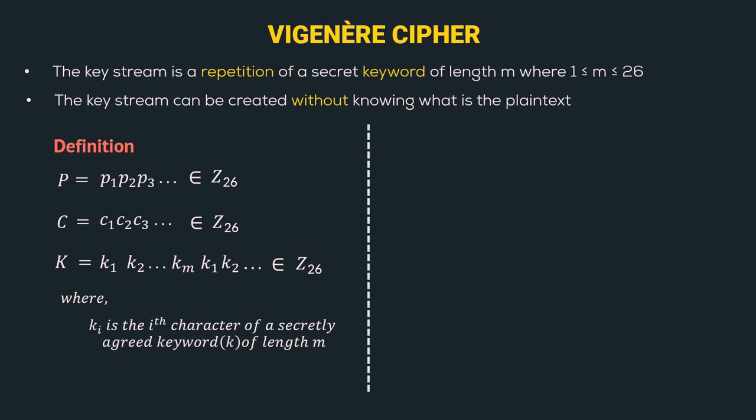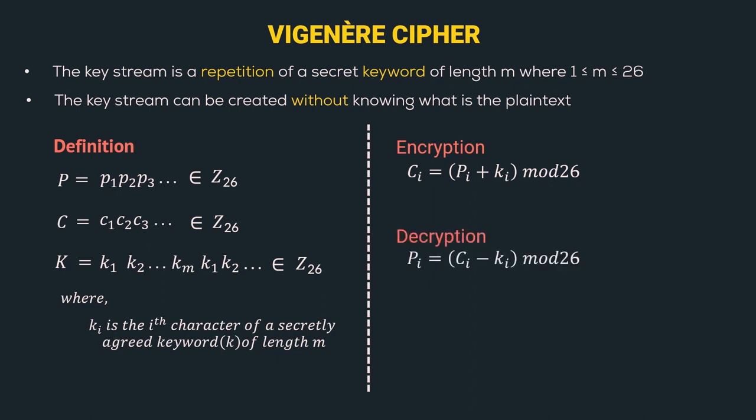Now let's look at the encryption and decryption of Vigenère Cipher. The encryption algorithm is Ci = Pi + Ki mod 26, and the decryption algorithm is Pi = Ci - Ki mod 26. These are the exact encryption and decryption algorithms of an additive cipher, also called a shift cipher, which I've already covered in one of our previous videos — link in the i button.